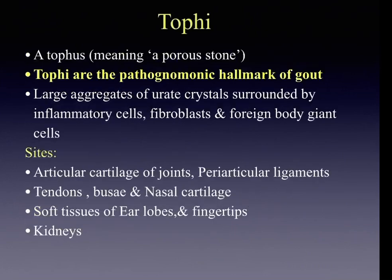Tophi — pathognomonic hallmarks of gout — are large aggregates of monosodium urate crystals surrounded by inflammatory cells, fibroblasts, and foreign body giant cells. Tophi occur in articular cartilage, periarticular ligaments, tendons, bursae, nasal cartilage, and soft tissues of ear lobes and fingertips.